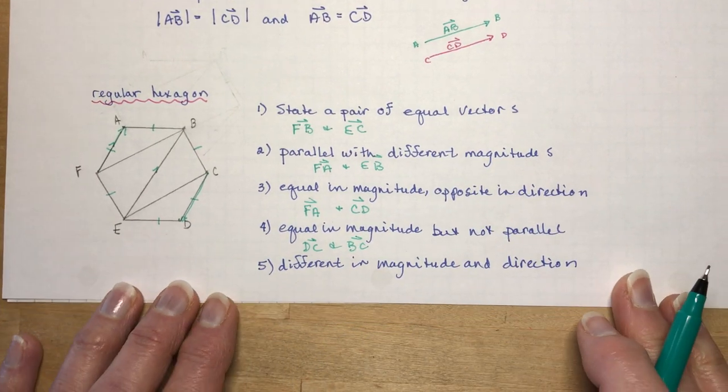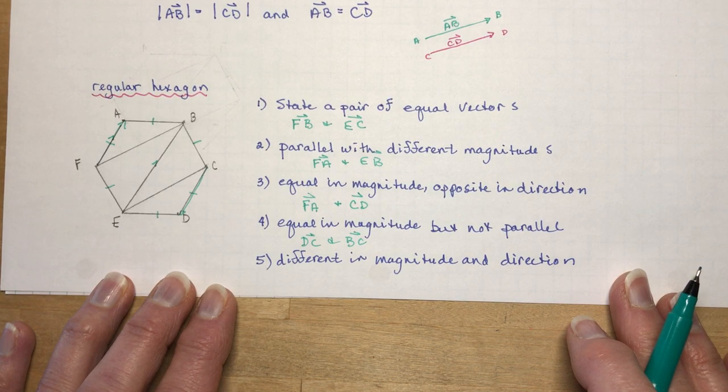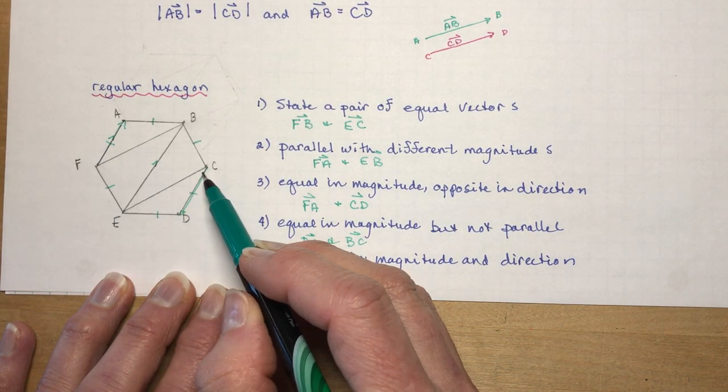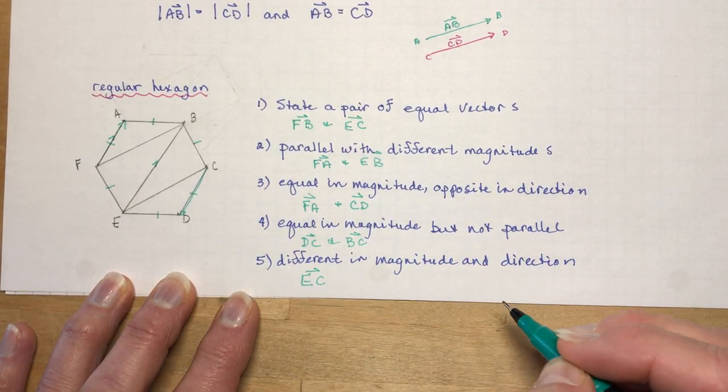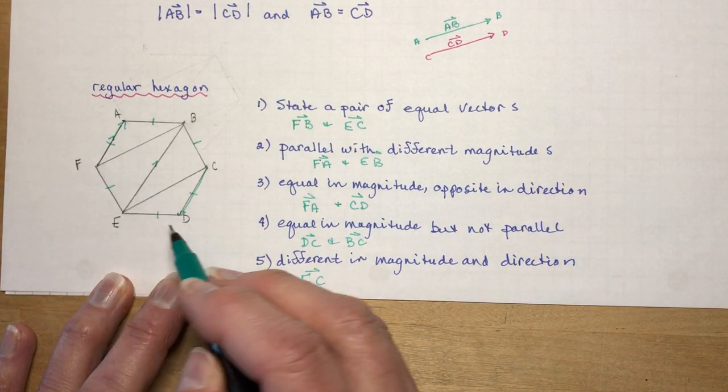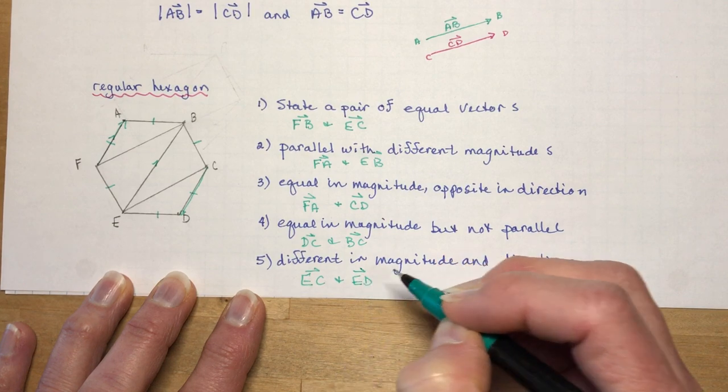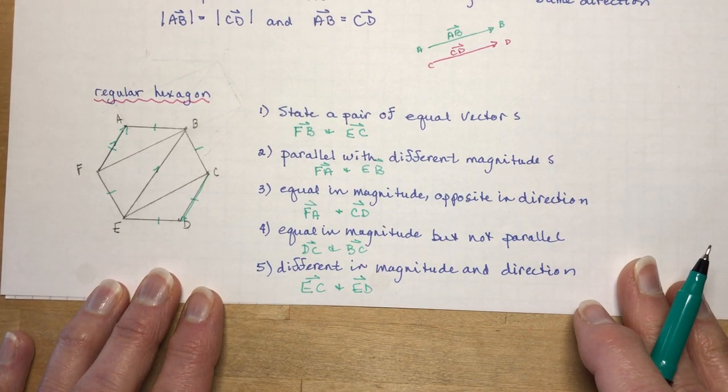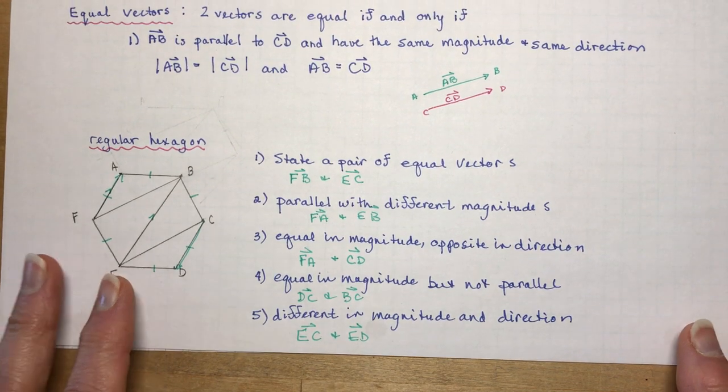And different in magnitude and direction. Well let's go from E to C. So if I said EC, what would be different in magnitude and direction? How about ED? So hopefully you got a little idea of how these are described. We haven't really done anything terribly fancy with them, but it is an introduction lesson, and I hope that helps you out.